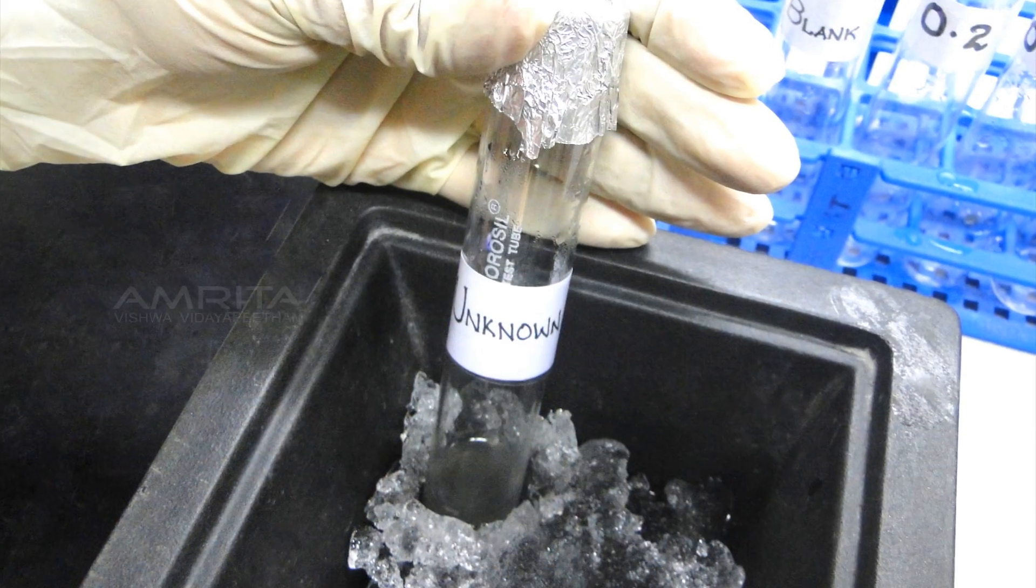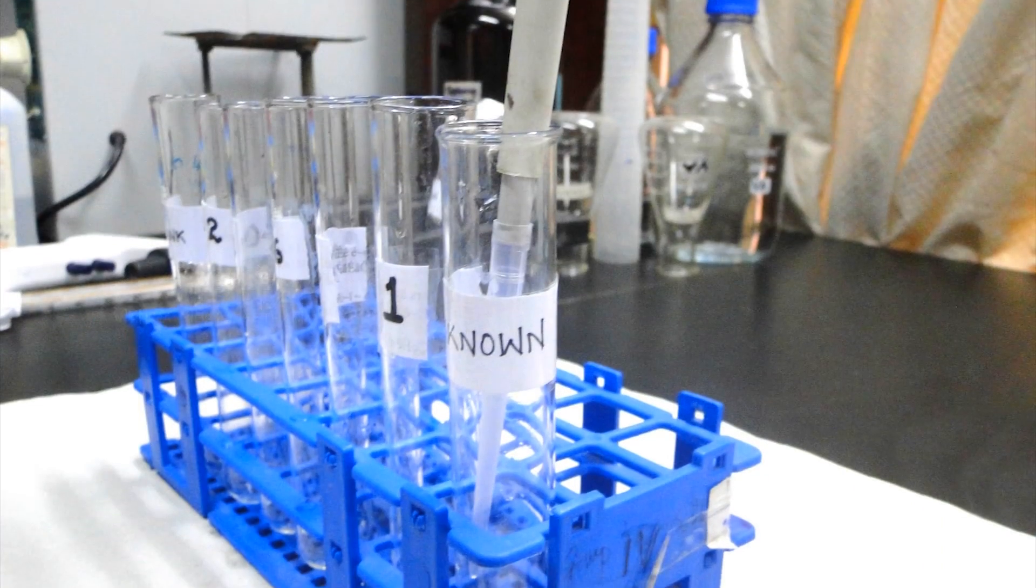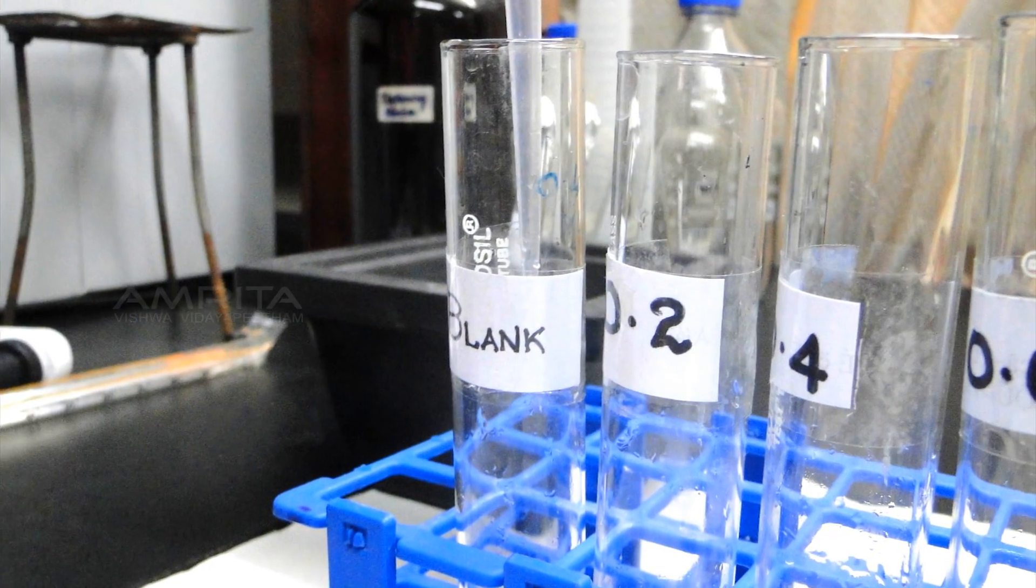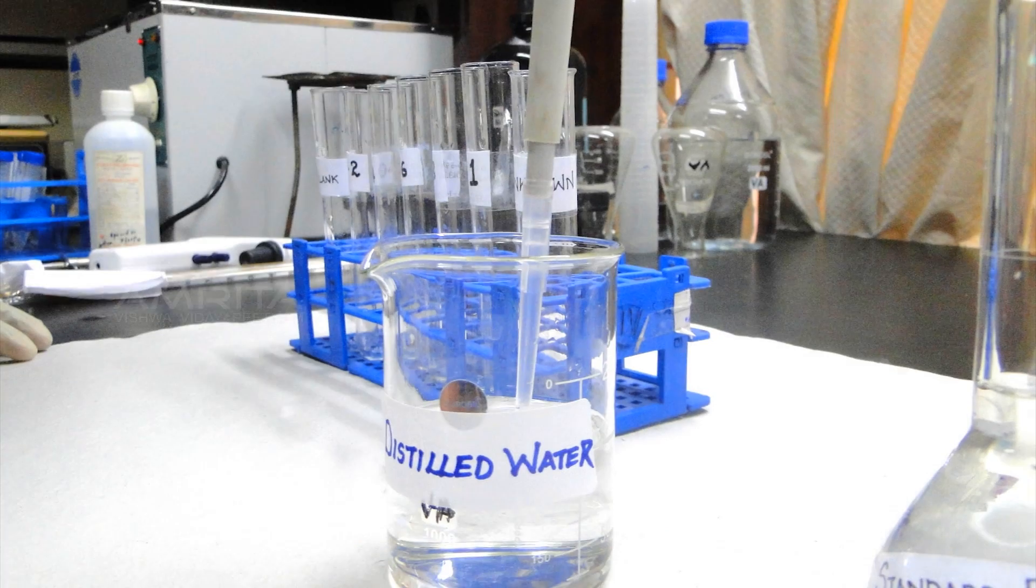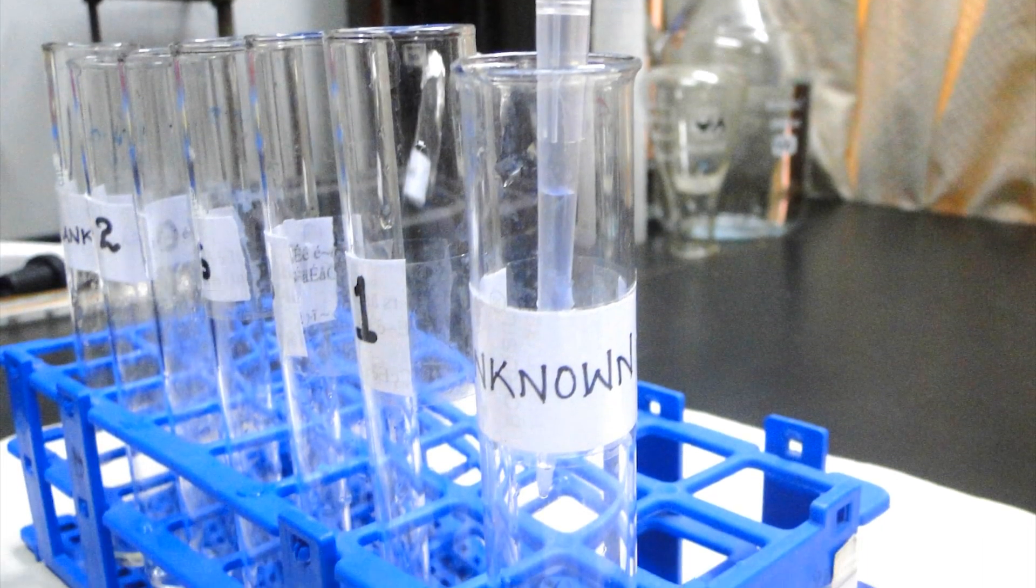Pipette a known volume of the unknown solution to the tube labeled unknown arranged in the test tube rack. To the test tube labeled blank, add 1ml of distilled water using a micropipette. Volume in each test tube is made up to 1ml by adding distilled water.